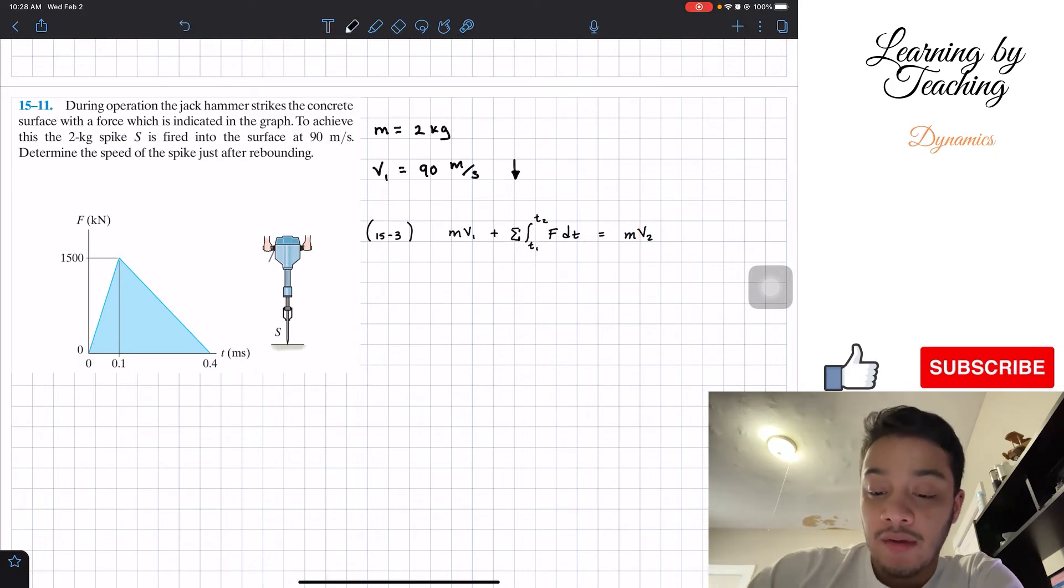So let's go ahead and plug in our numbers. We have the mass is equal to 2, the velocity is equal to negative 90, and I'm saying negative because it's going down, so I'm assuming going up is positive. So going up is positive for this equation.